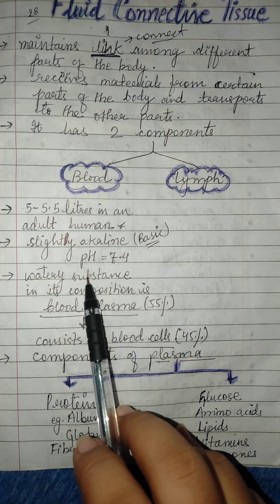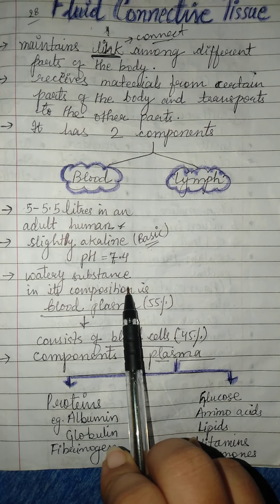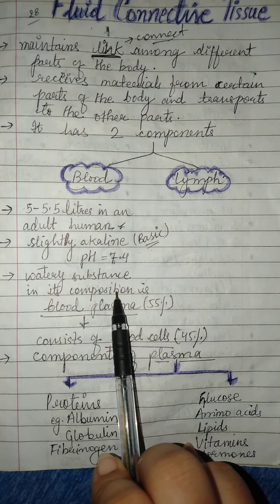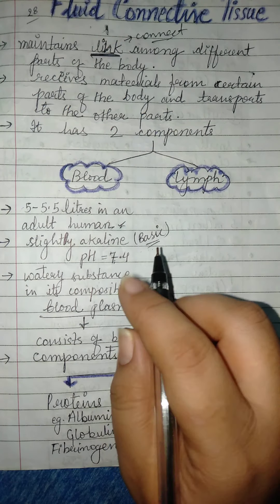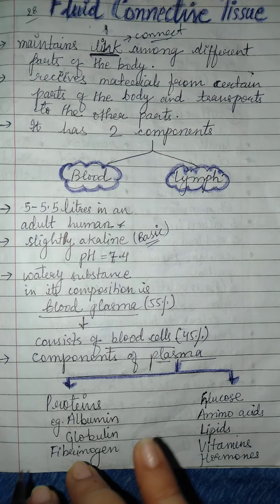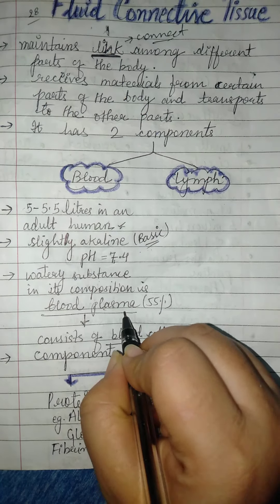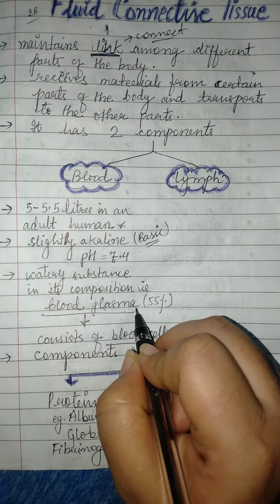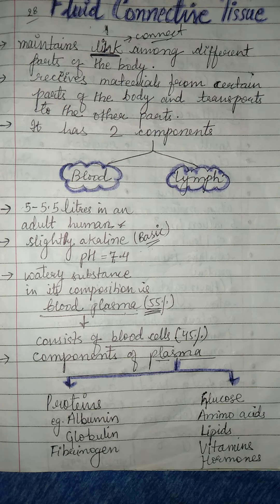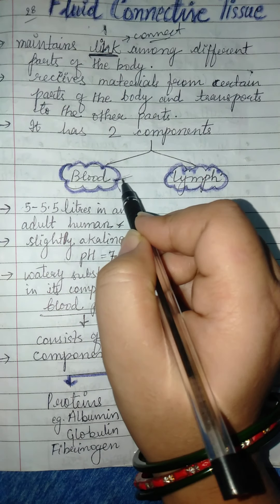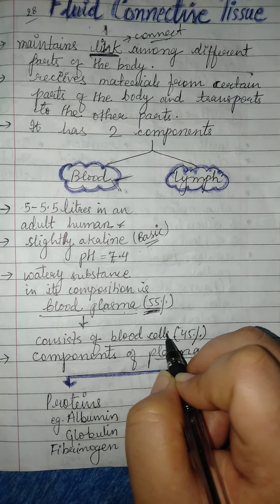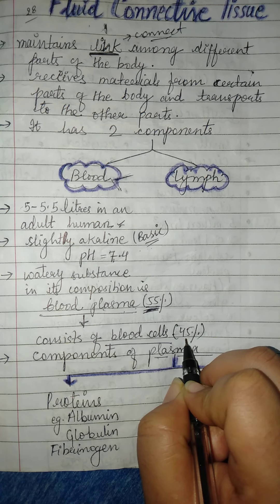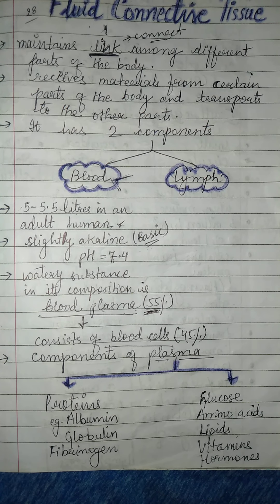Blood has a watery substance in its composition. Inside blood, there is a fluid part, which we call plasma. Blood plasma makes up 55 percent of blood. The remaining 45 percent consists of different cells known as blood cells or blood corpuscles. So if blood is separated and observed, the fluid part is 55 percent and the remaining 45 percent contains different cells.